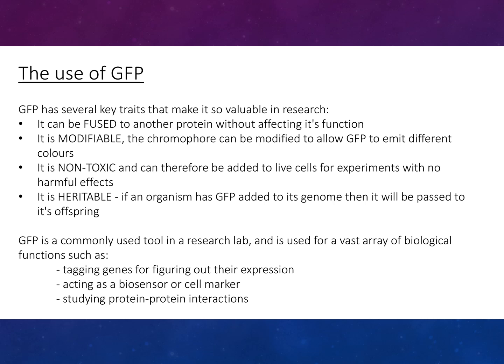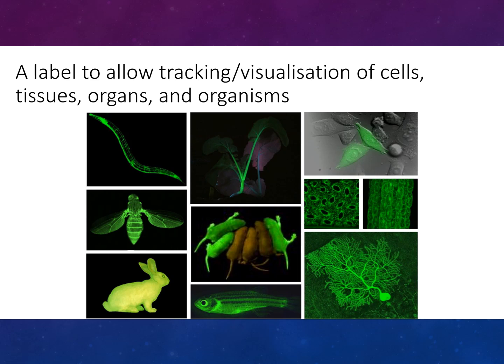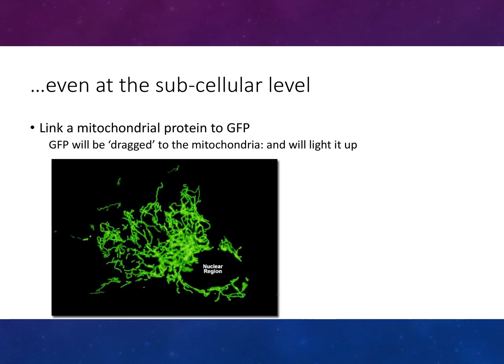GFP is a commonly used tool in research labs for a wide array of biological functions, such as tagging genes to figure out their expression, acting as a biosensor, cell marker, and studying protein-protein interactions. It acts as a label to allow tracking and visualization of cells, tissues, organs, and organisms, and even at the sub-cellular level.